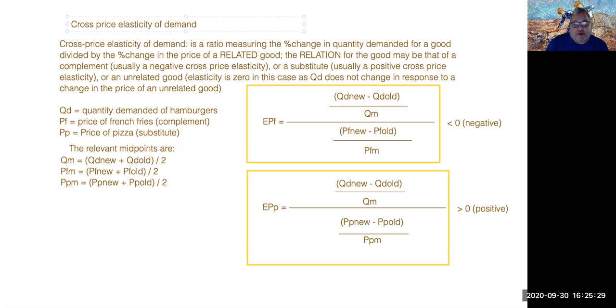So in this case, as the price of french fries rises, the demand for hamburgers and the quantity demanded for hamburgers goes down, which is why in the case of a complement you will see a negative cross price elasticity of demand.